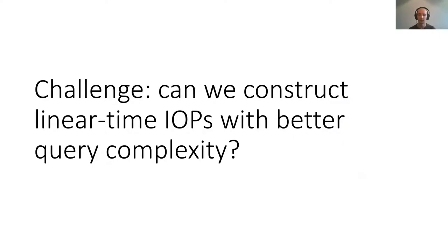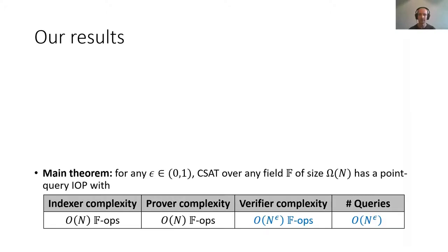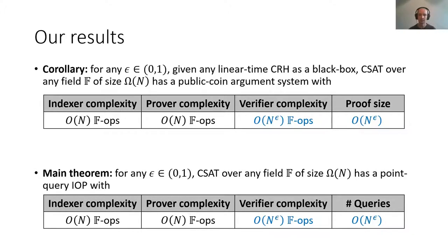Our challenge is to see if we can do better and reach our holy grail by constructing linear time IOPs with better query complexity. Our main theorem is that for any epsilon and for any finite field with sufficiently many elements, there is a point query IOP which has a linear indexer complexity and a linear prover complexity, and then a sublinear verifier complexity and sublinear query complexity. By using the linear time hash function and the same strategy as the 2017 work, we show that there is a corresponding linear time argument with very similar parameters.